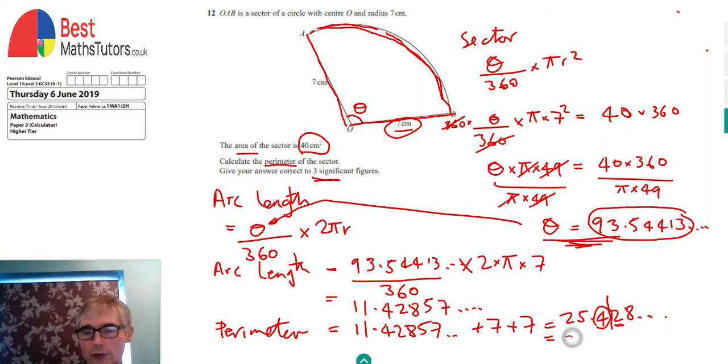To three significant figures what we've got is 25.4 centimeters because we've been working in centimeters all the way through. So that's it, that's our final answer.